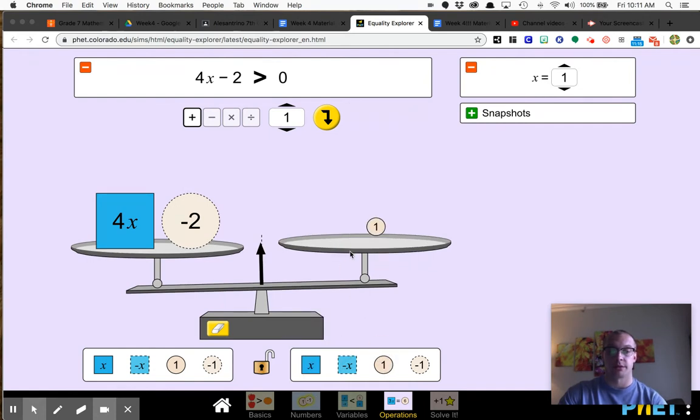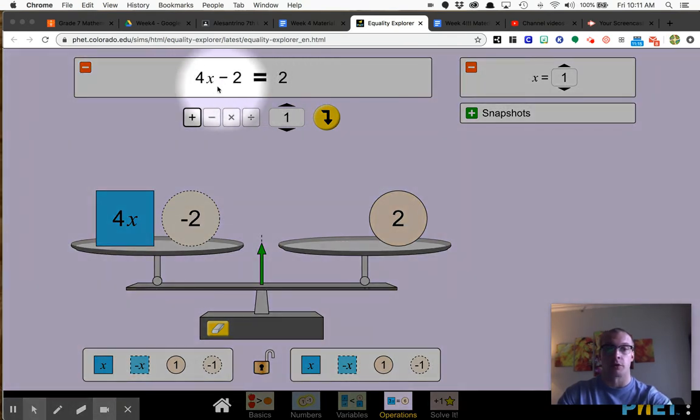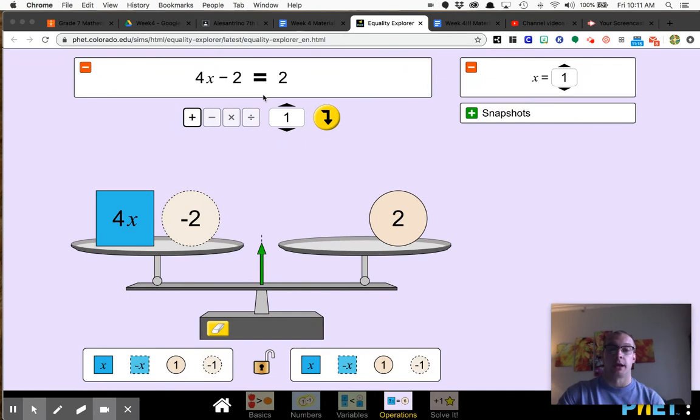Maybe not x on this side. So 4x minus 2 equals 2. Great. So this could be one equation that I could write on my Google Doc. Since I created this one, I would like you guys to start creating your own.